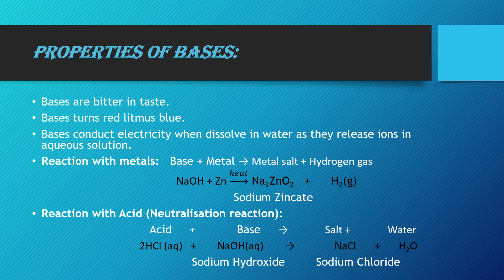Coming to the properties of bases: bases are bitter in taste — recall that acids are sour in taste. Bases turn red litmus blue. A simple memory trick: Base B, Blue B. Third property is that bases conduct electricity like acidic solutions. Why? Because they release OH⁻ ions in their aqueous solution, and because they release ions, those ions move from one electrode to another and complete the circuit — hence they are good conductors of electricity.